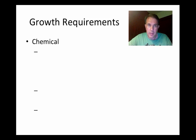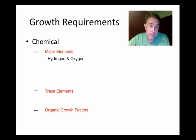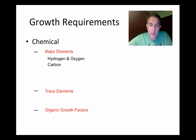Turning now to the chemical requirements needed for growth, these fall into three basic categories: the major elements, trace elements, and organic growth factors. Hydrogen and oxygen are required for all organic molecules and are usually obtained from water. Carbon is the structural backbone for all organic molecules and makes up about 50% of the dry weight of a typical bacterial cell. Heterotrophs obtain their carbon from their source of energy — organic materials such as carbohydrates, proteins, or lipids.